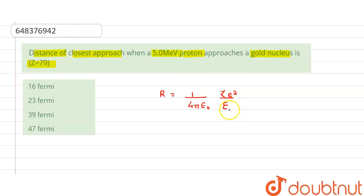Here E is the energy, minimum energy, which is given E = 5 MeV.